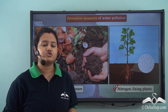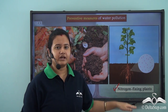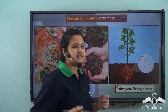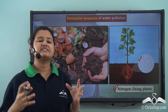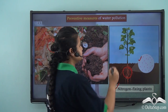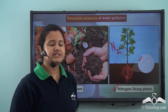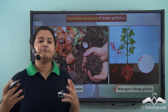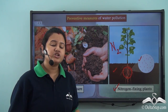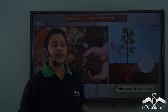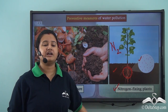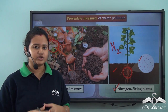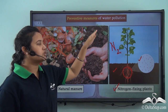Another measure to control agricultural waste is by planting nitrogen-fixing plants. At the root nodules of these plants, different microorganisms — especially bacteria — are present. This bacteria converts atmospheric nitrogen into compounds of nitrates that can be used by plants, making the soil fertile. So if we use natural manure and nitrogen-fixing plants instead of chemical fertilizers and pesticides, we can naturally increase soil fertility and also control water pollution.